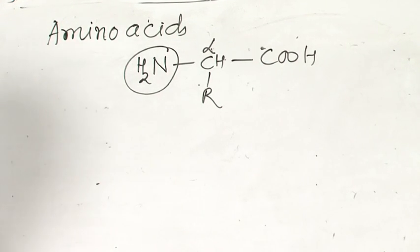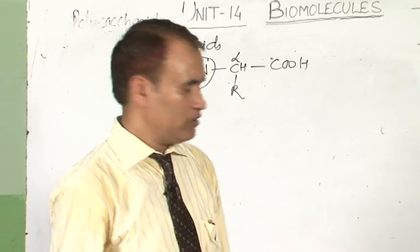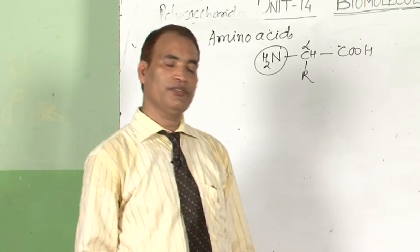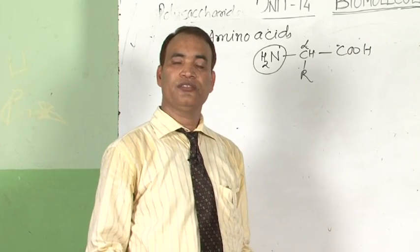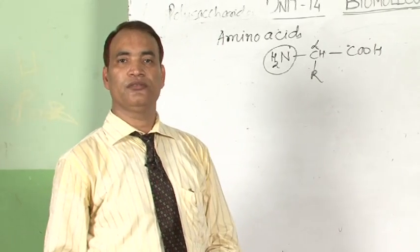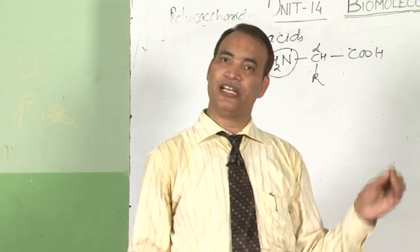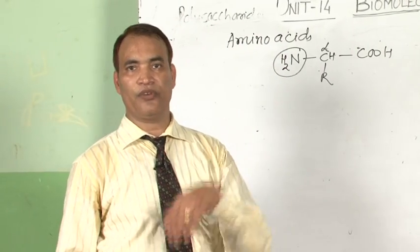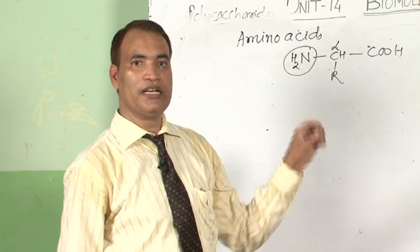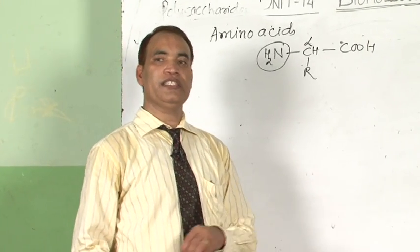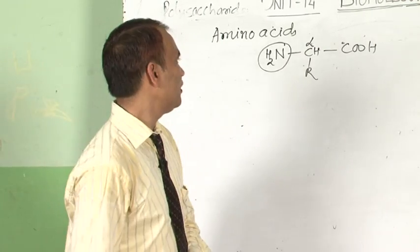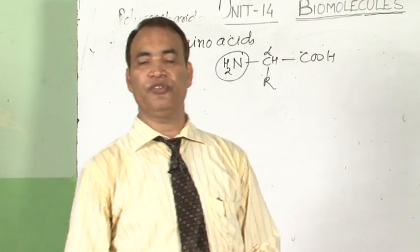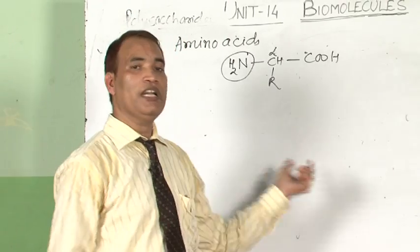Amino acids are classified in terms of essential and non-essential. Essential amino acids are those required from diet because the body cannot synthesize them. Non-essential amino acids are synthesized by the body. There are a total of 20 amino acids. We need to know a few examples: essential and non-essential.